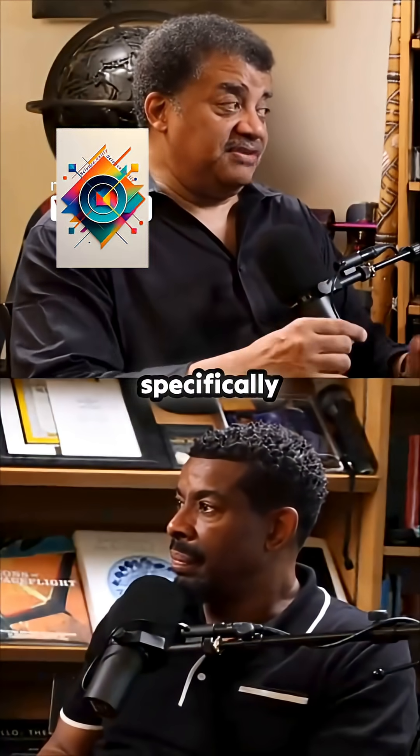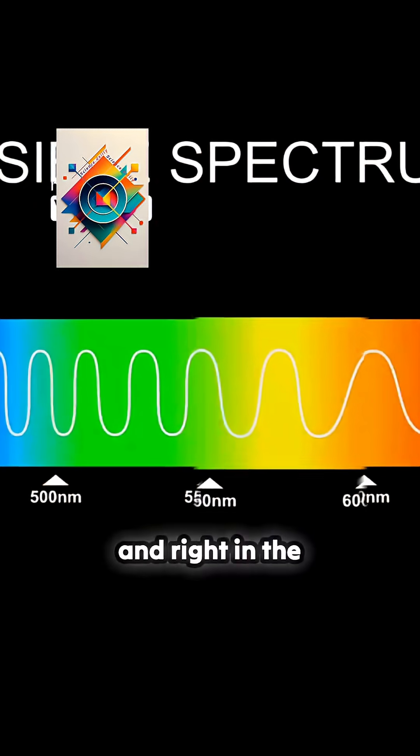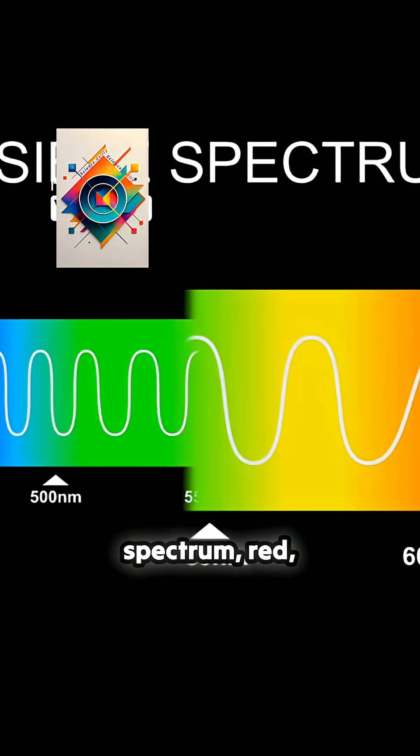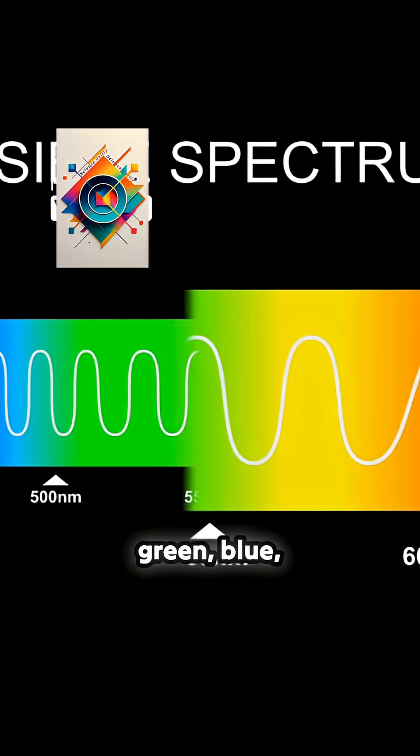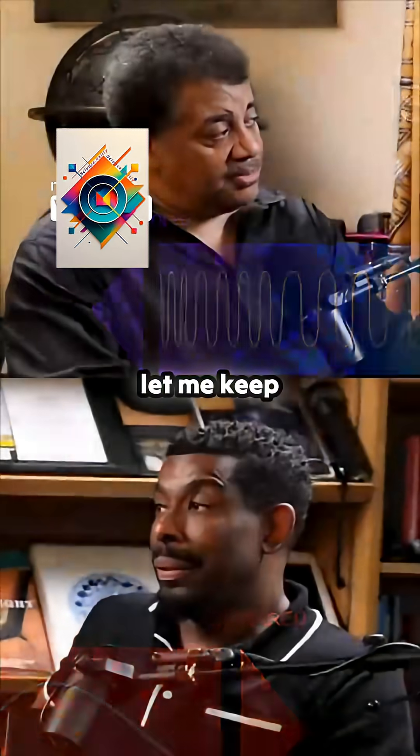And specifically yellow light, right in the middle of the spectrum — red, orange, yellow, green, blue, violet — right in the middle.